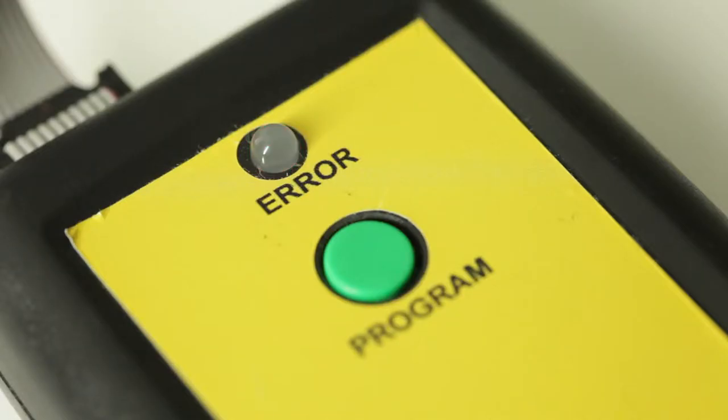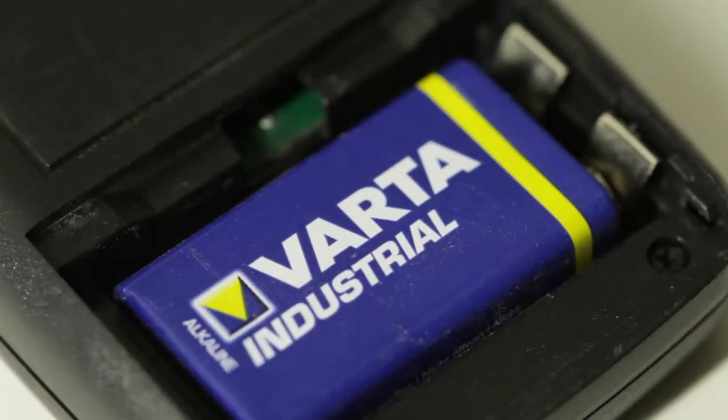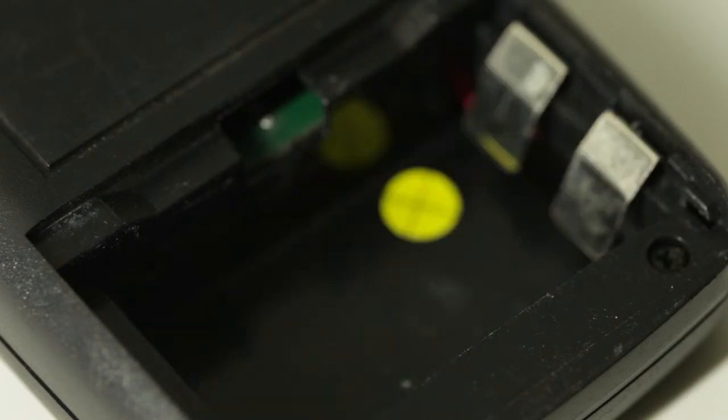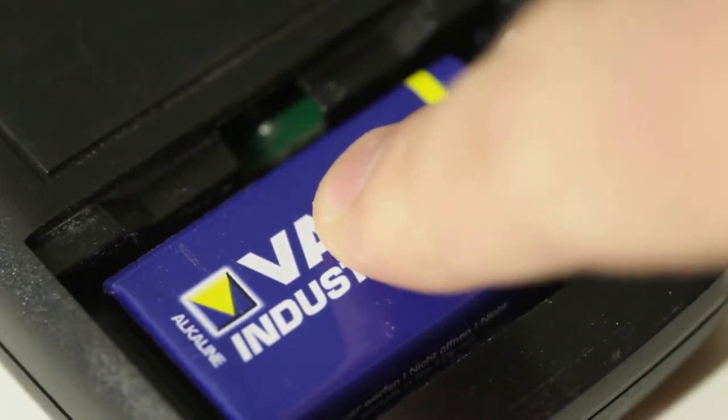If the error light flashes red, then there is a bad connection. Remove both connections and start the procedure over again. A red error light may also indicate a weak battery in the programmer. If this is the case, replace it with a 9-volt battery.